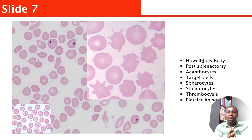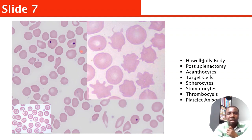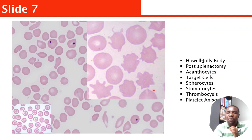This slide has target cells, acanthocytes, and Howell-Jolly bodies — that dot you see inside the red cell. Once you see Howell-Jolly bodies, acanthocytes, and target cells — sometimes even teardrops — start thinking about post-splenectomy. The giveaway features for post-splenectomy are acanthocytes, target cells, and Howell-Jolly bodies.